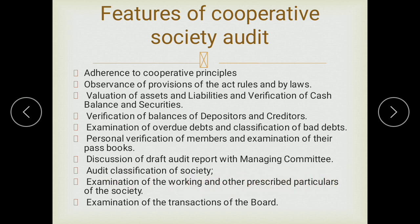Another feature is the examination of the working and other prescribed particulars of the society — checking whether activities are carried out as per prescribed rules. For example, a consumer cooperative society should be producing good quality products purchased at lower prices for members. Also included is examination of transactions of the board of directors — checking whether the board of directors is working in the best interest of the members.